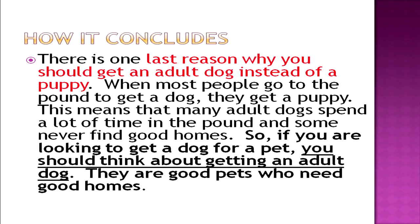He concludes with advantages of the adult dog and disadvantages of the puppy: 'There is one last reason why you should get an adult dog instead of a puppy. When most people go to the pound to get a dog, they get a puppy. This means that many adult dogs spend a lot of time in the pound and some never find good homes. So, if you are looking to get a pet dog, you should think about getting an adult dog. They are good pets who need good homes.' This is the climax of the persuasion — he makes his point very clear. This is how we approach an argumentative essay.